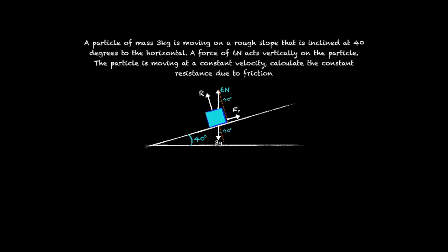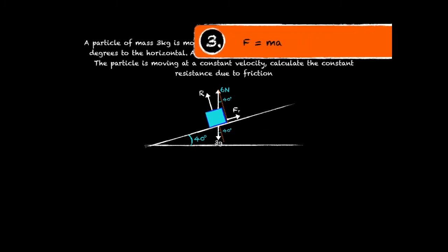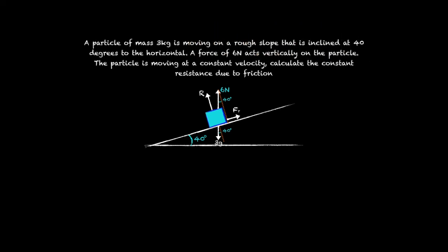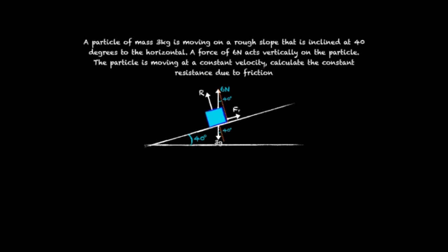Now that we've got all the forces labeled on the diagram and split into their components we can go ahead and do the last step which is to use the equation F equals MA. Like in the first example we only need to consider F equals MA going parallel to the slope.